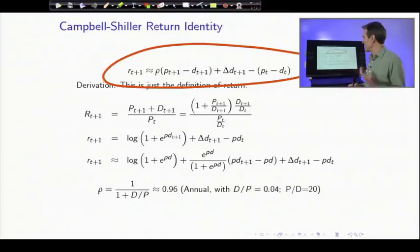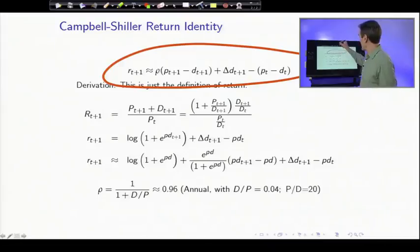Intuitively, it's not saying anything unusual. It's saying, how do you get a good return? You get a good return by prices being high tomorrow, by getting a lot of dividends, or prices being low today. So it's saying something completely reasonable.